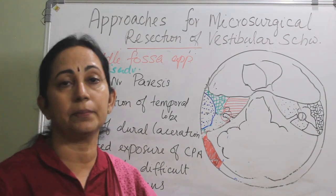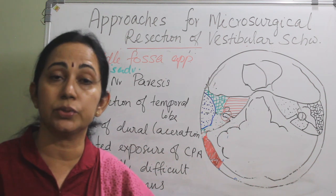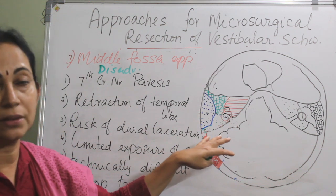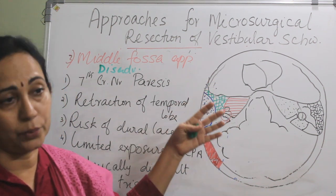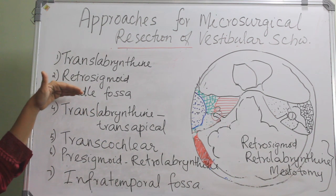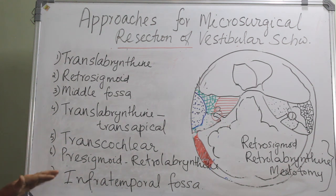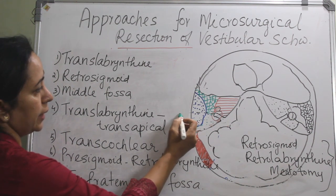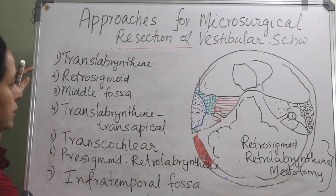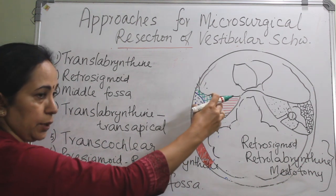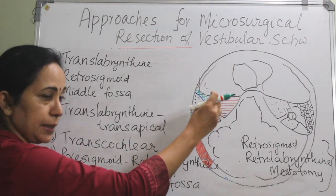To summarize, I have explained the translabyrinthine approach, the retrosigmoid approach, and also the middle fossa approach. From this picture, we can clearly identify all the other approaches as well. Translabyrinthine goes directly through the labyrinth into the internal acoustic meatus; retrosigmoid goes posteriorly; and the middle fossa approach goes through the middle fossa to reach the temporal bone.